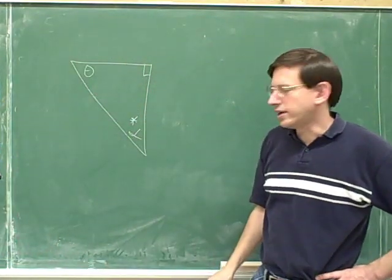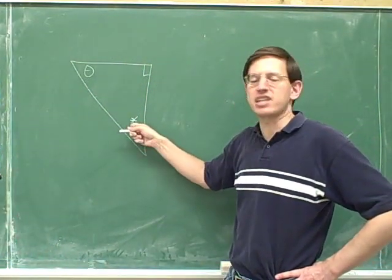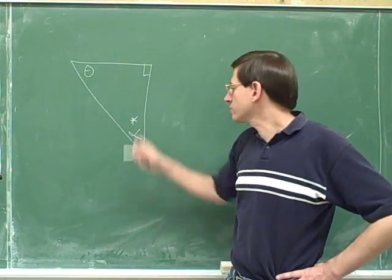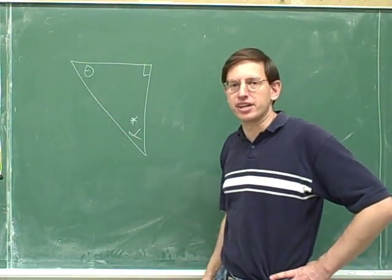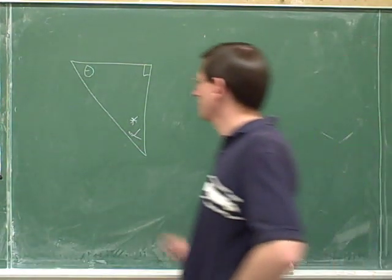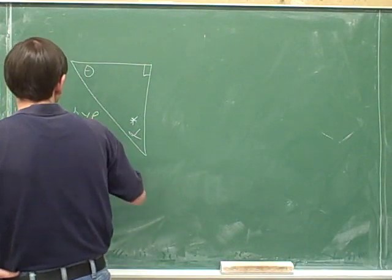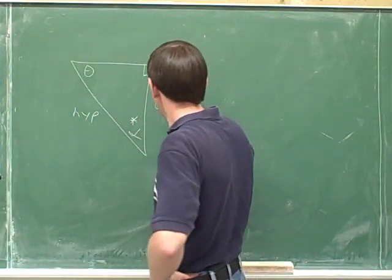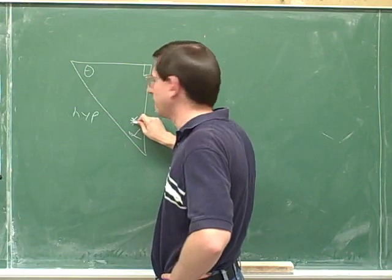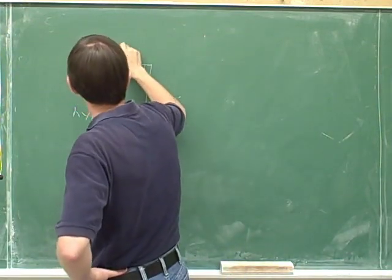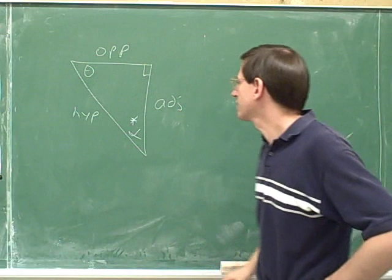Now I have a right triangle and I'd like you to focus on alpha. I put this asterisk in to remind you to focus on alpha. So please write in the hypotenuse, opposite, and adjacent sides. The hypotenuse is opposite to the 90-degree angle. This side here is clearly adjacent to the asterisk, and this side here is opposite to the asterisk.